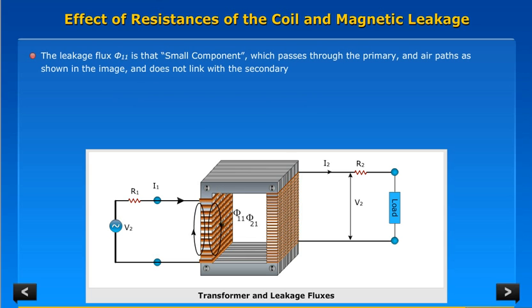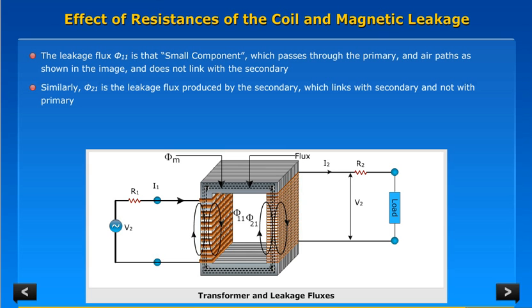The leakage flux Phi11 is that small component which passes through the primary and air paths as shown in the image and does not link with the secondary. Similarly, Phi21 is the leakage flux produced by the secondary, which links with secondary and not with primary.